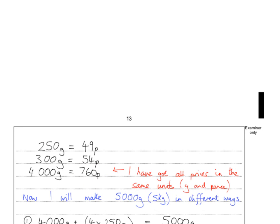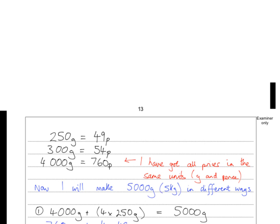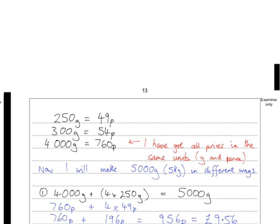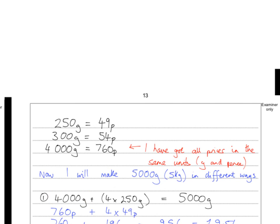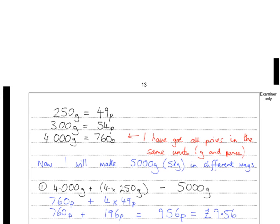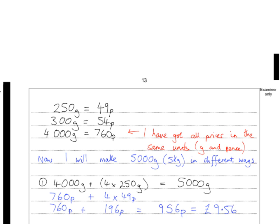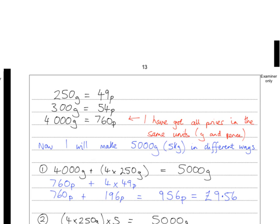Option 1: I spotted the 4 kg bag was close, and found that 4 lots of the 250-gram bags would make up the remaining 1,000 grams — so 4,000 g plus 4 × 250 g gives exactly 5,000 g. The 4 kg bag price was given, and 4 lots of the 250-gram bags needed 4 times 49p. Using double-and-double again: double 49 is 98, double 98 is 196, so that's 196p. Then 760p plus 196p came to a total of 956p, or £9.56.